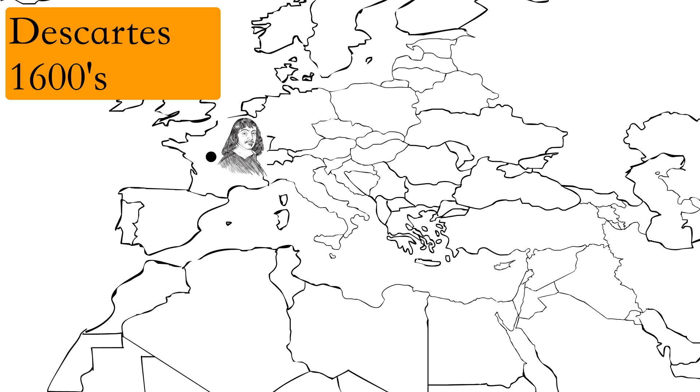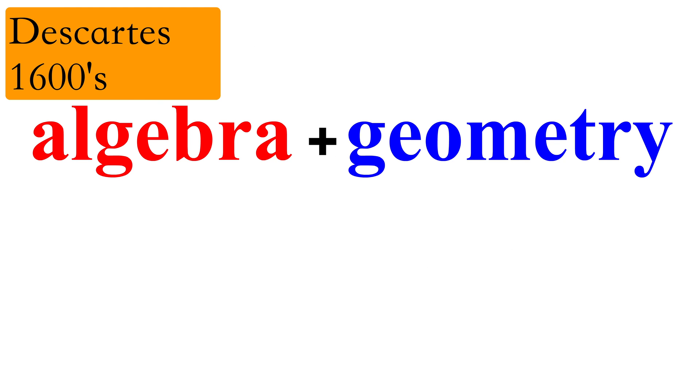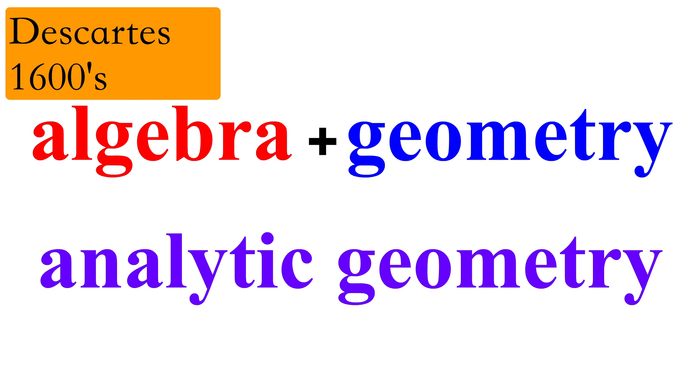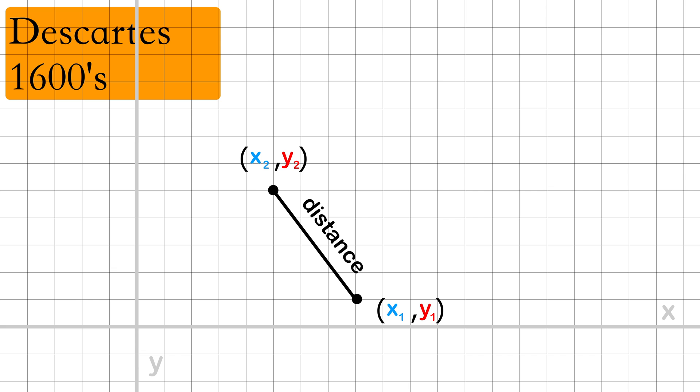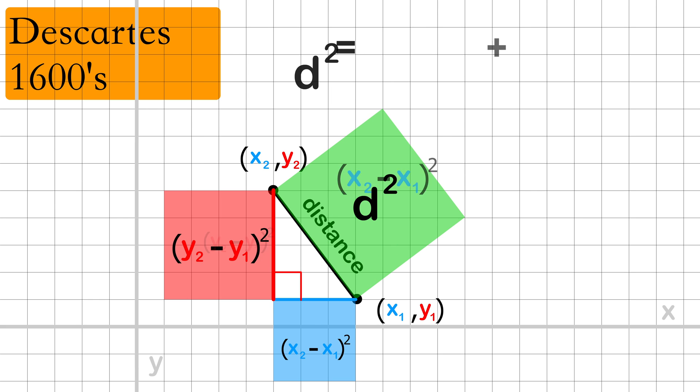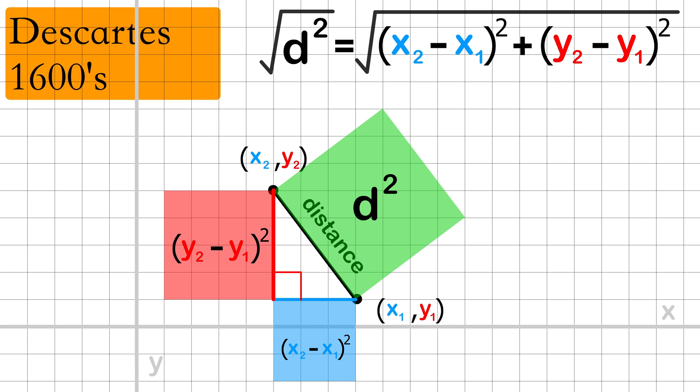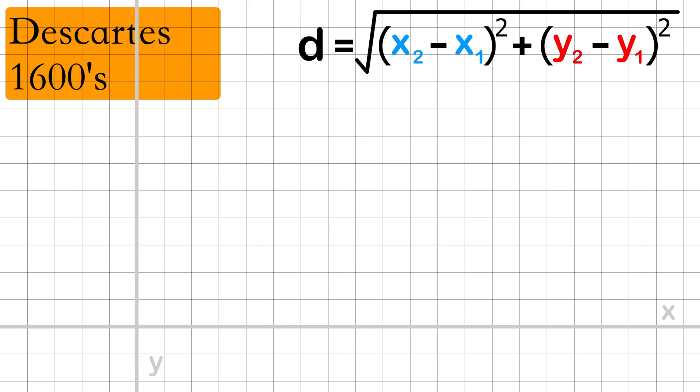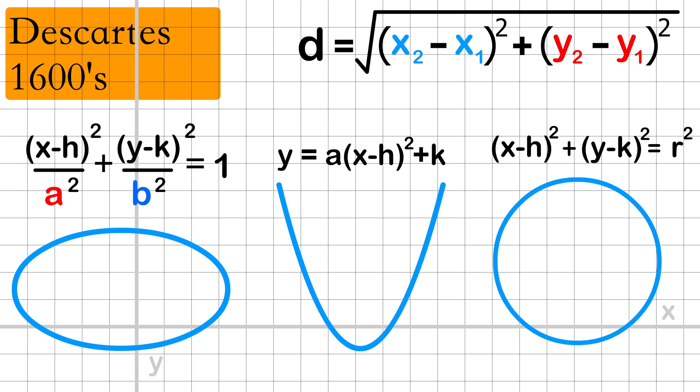Around the 1600s, René Descartes helped to completely combine geometry and algebra together using the Cartesian coordinate system. At the heart of this transformation is the Pythagorean theorem because it is used to derive the distance formula. The formula is then used to derive the equations of the ellipse, the parabola, hyperbola, and the circle.